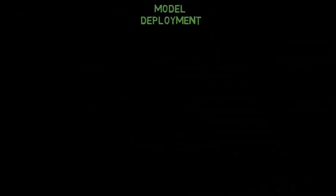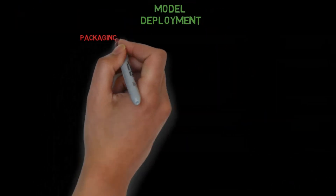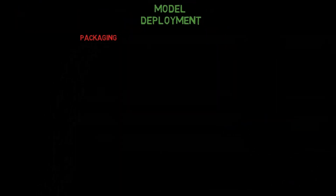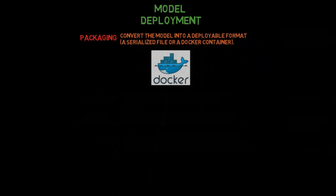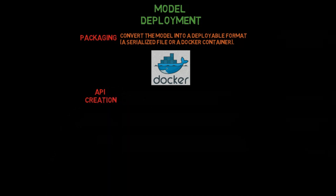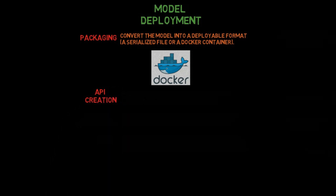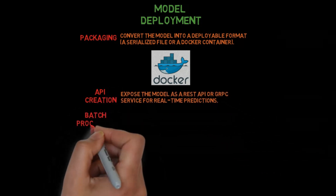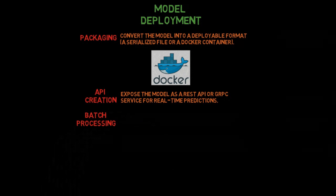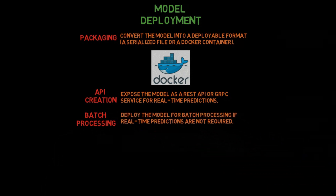Step 6: Model deployment. Packaging: Convert the model into a deployable format — for example, a serialized file or a Docker container. API creation: Expose the model as a REST API or gRPC service for real-time predictions.